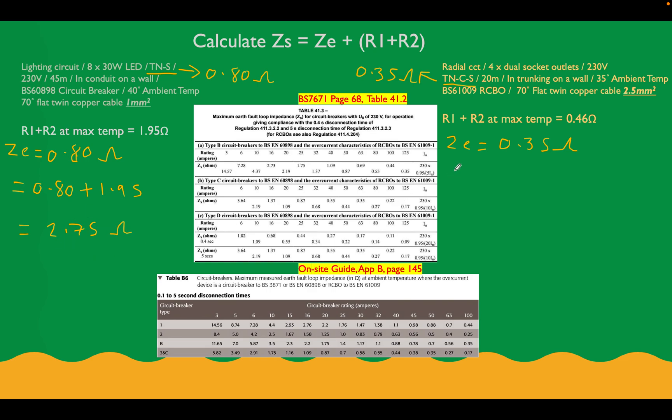Let's go on this side and do the same again. So this is going to be equal to 0.35 plus 0.46, which is our maximum ZE plus our R1, R2 value, and that's going to be equal to 0.81 ohms. So that's our ZS value for the radial circuit. Perfect. Let's underline those so we can recognize those afterwards.